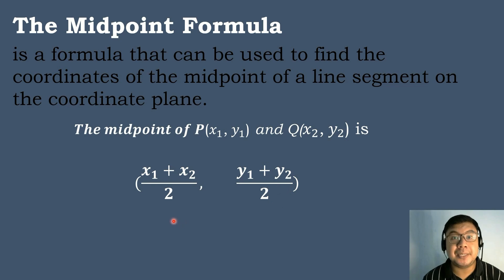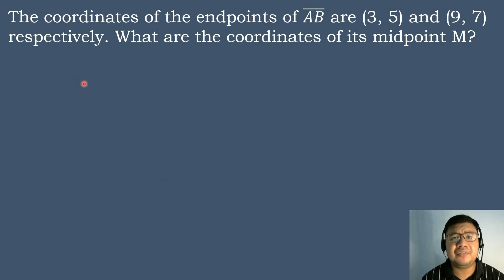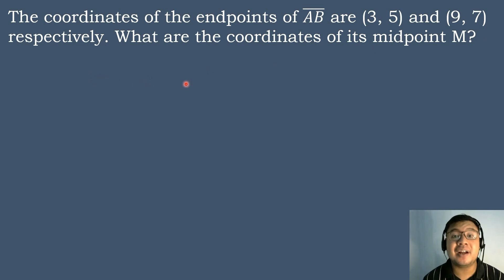So this will be the formula in finding the midpoint of a line segment. Let's try our first example. The coordinates of the endpoints of segment AB are the ordered pair (3, 5) and (9, 7), respectively. What are the coordinates of its midpoint M?